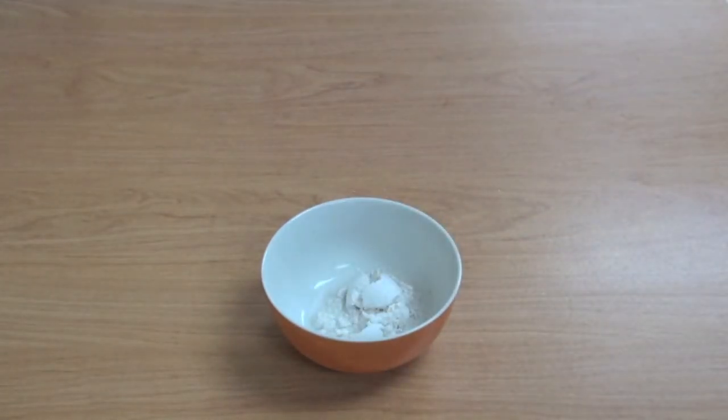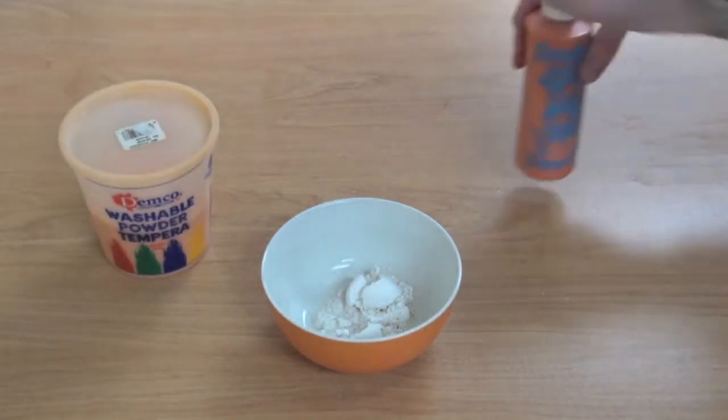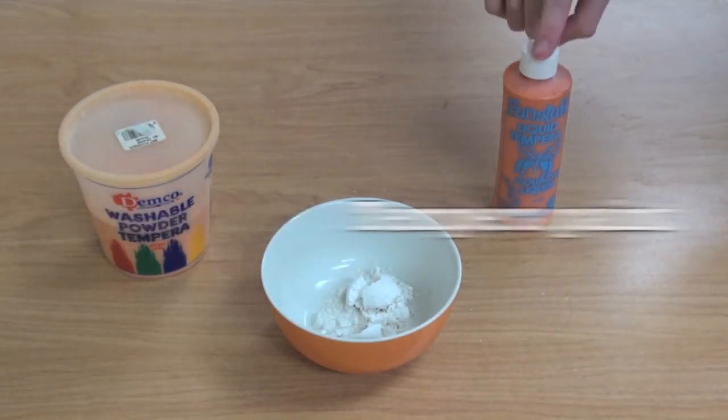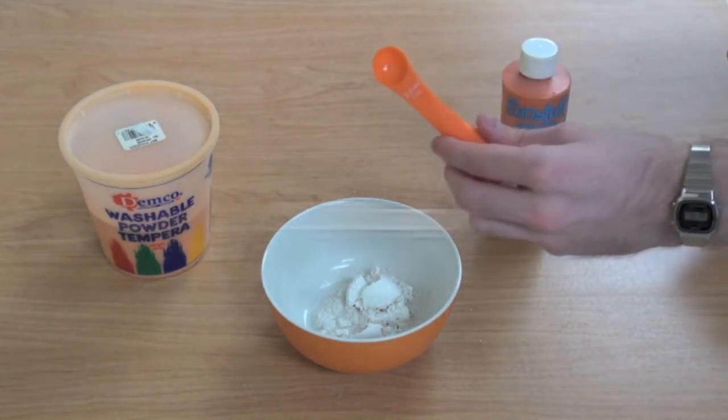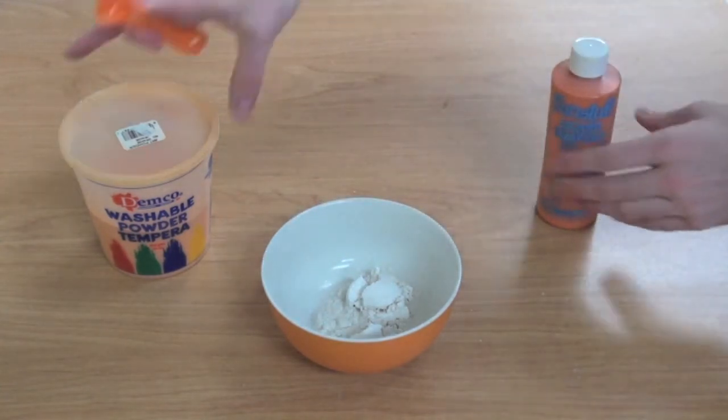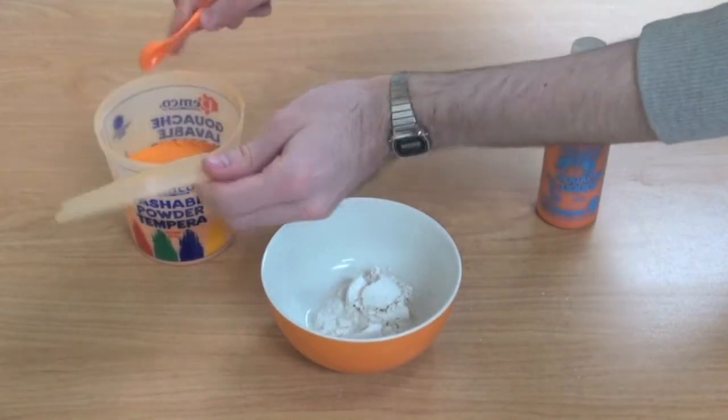For an alternative version of making these colors, you can also add tempera paint, either in the form of tempera powder or tempera paint. You're going to take half a teaspoon of either tempera powder or tempera paint and pour it directly into your mixture.